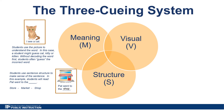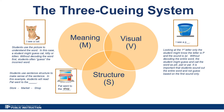Visual cues in early reading mean the reader is focused mainly on the print, the letters, in the words. While this is a great strategy, students often stop after the first letter in the word. This often occurs when students attend to the first sound in a word and then guess based on that first sound without sounding out the entire word. For example, in the following sample book page, it reads 'I see a pale.' Looking at the first letter only, the student might know the letter is P and the sound is /p/, but without decoding the entire word, the student might guess pill, pale, or pal. It is important that students sound out the entire word and not guess based on the first sound only.